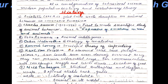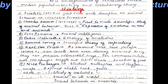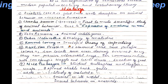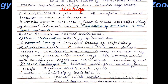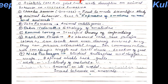Carl von Frisch observed that bees perceive colors and can locate the sun even during overcast conditions. They could perceive ultraviolet rays and communicate the direction and distance of food through waggle dancing and circle dance, for which he received a Nobel Prize.